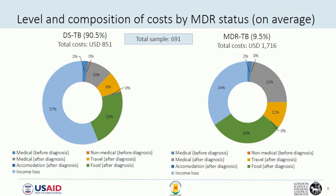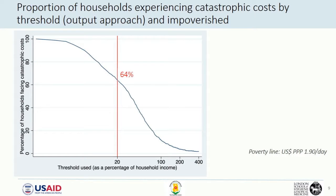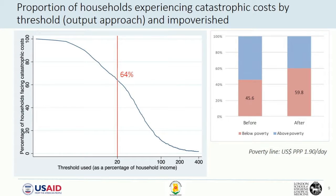Drug-sensitive TB patients incurred about $850 per their TB episode, while drug-resistant TB patients incurred more than double this amount. Indirect costs accounted for the largest proportion, followed by expenses on food and medical costs. At a threshold of 20% of annual household income — the current WHO-recommended threshold — more than two-thirds of patients experienced catastrophic health expenditure, and an additional 14% were pushed below the poverty line due to TB.